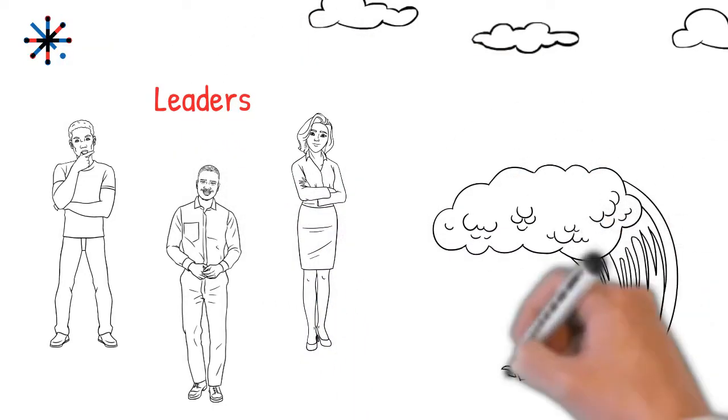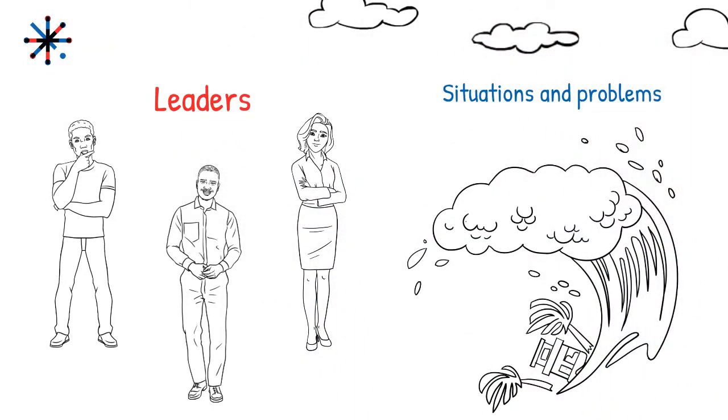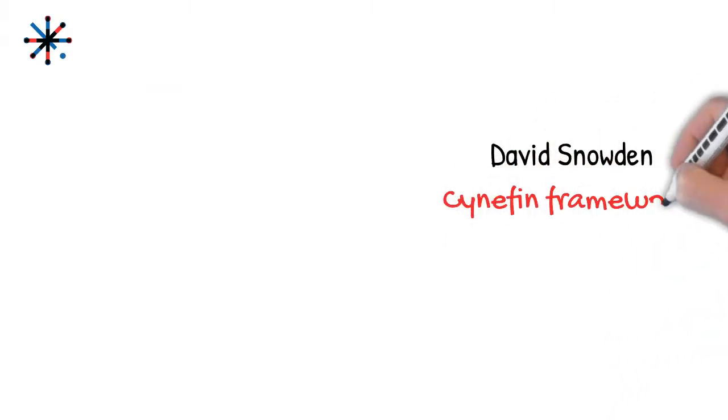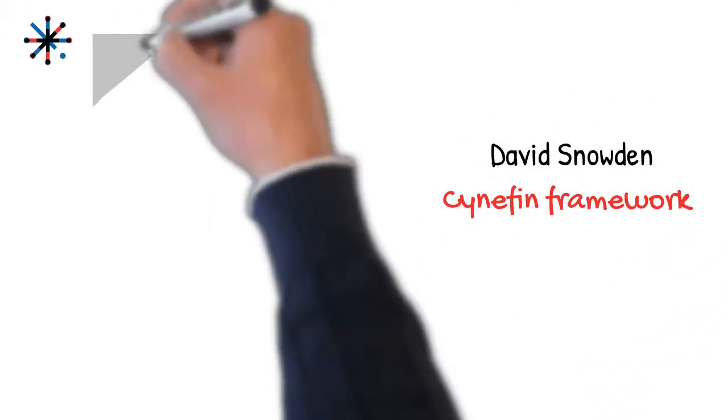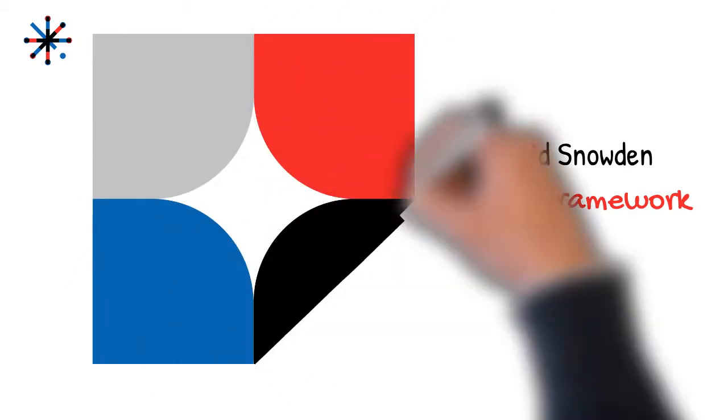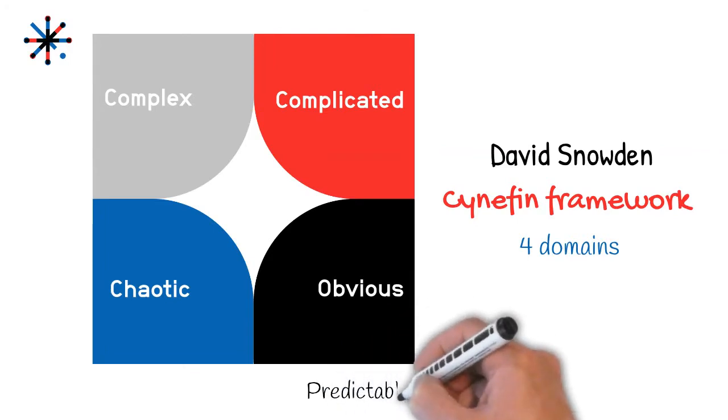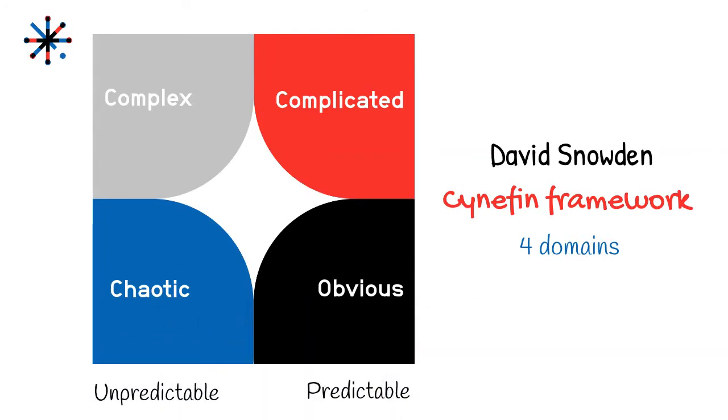As leaders, we have developed habits in the way we respond to situations and problems. David Snowden's Cynefin framework helps us to classify situations and identify the optimal way to respond. The Cynefin framework consists of four domains or four archetypes of situations, split into predictable and unpredictable.